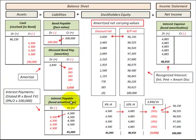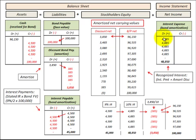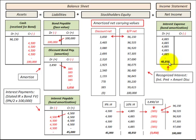Looking at the discount on bonds payable as a balancing entry between interest payable and interest expense: in the first period, we have a $385 credit to discount on bonds payable, which we add to the $4,500 interest payable, and that balances with the $4,885 debit for interest expense. In total, we recognize a $3,850 credit to discount on bonds payable, add the $45,000 interest payable credit, and get a $48,850 debit for total interest expense.